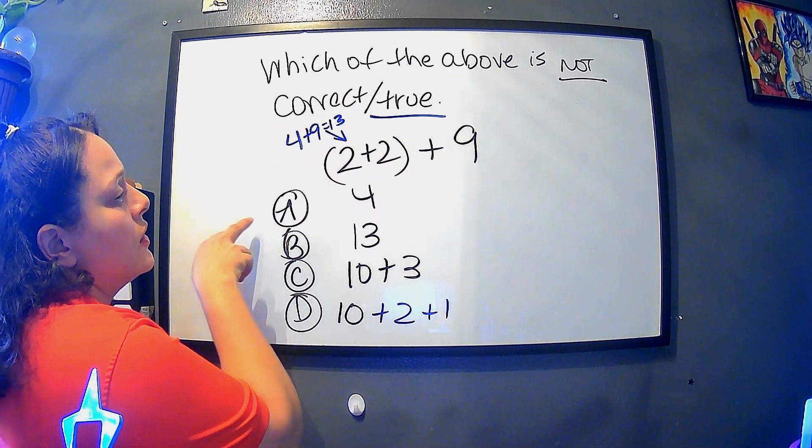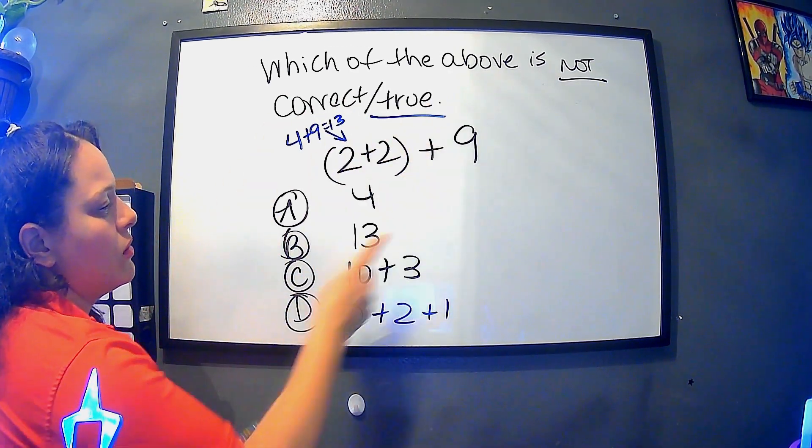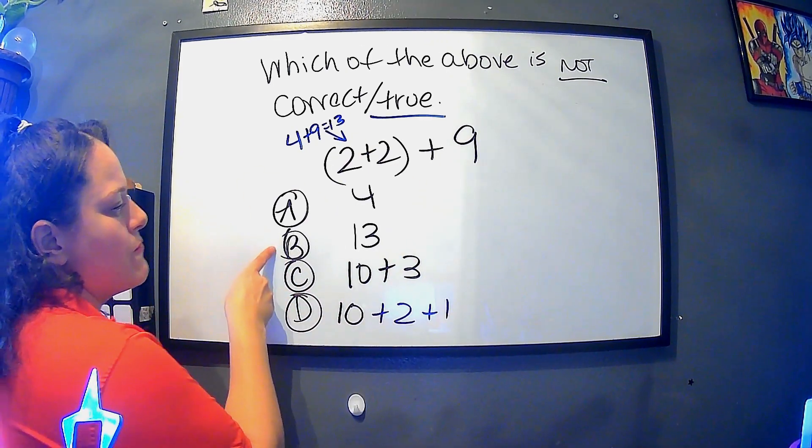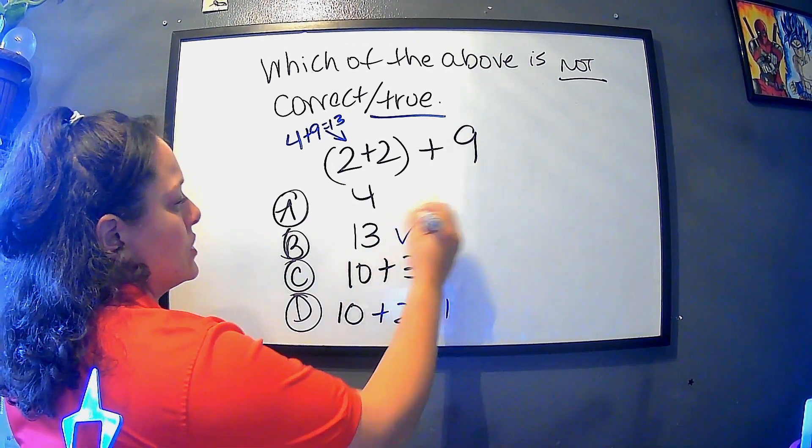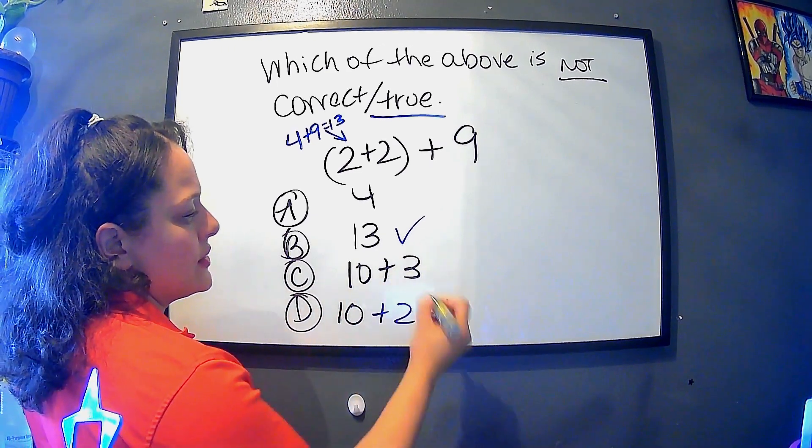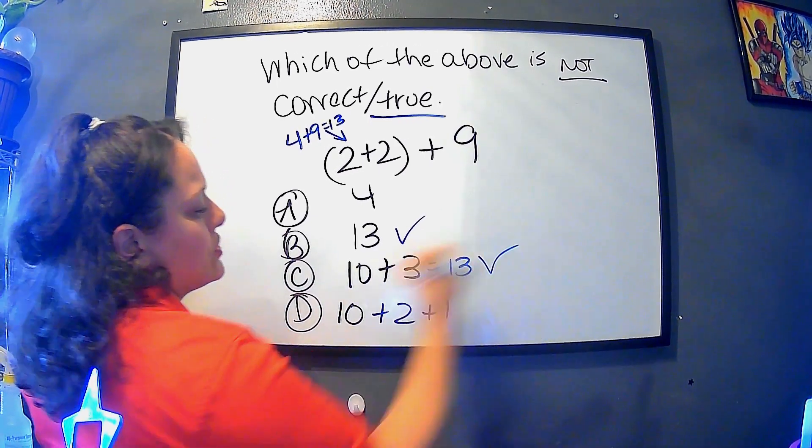So in this case, it says not true. So let's look at the answers here. See, we have B, 13. So this one is true. 10 plus 3 equals 13. So this is also true.